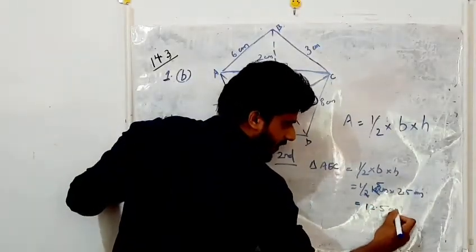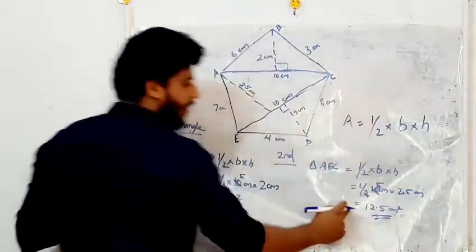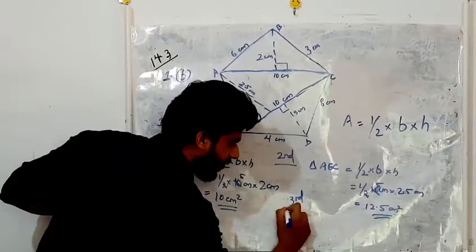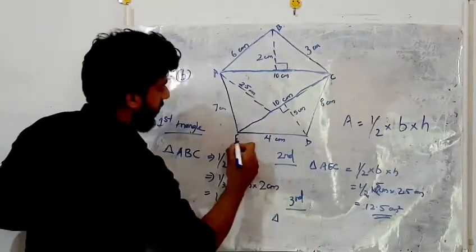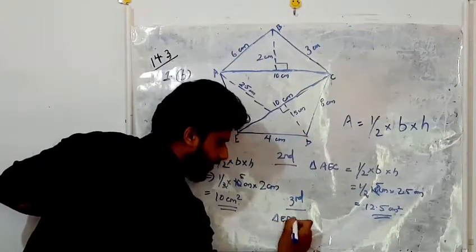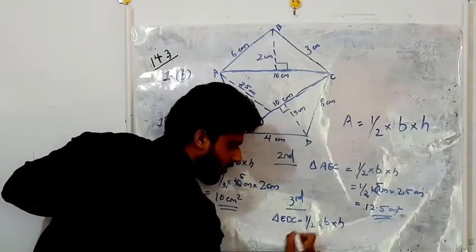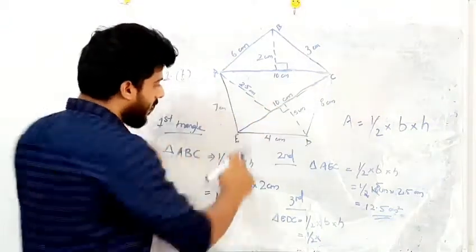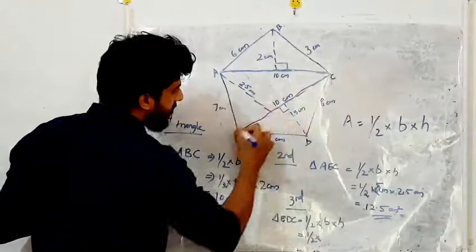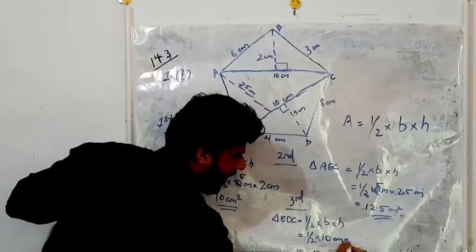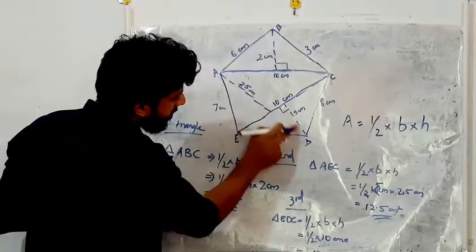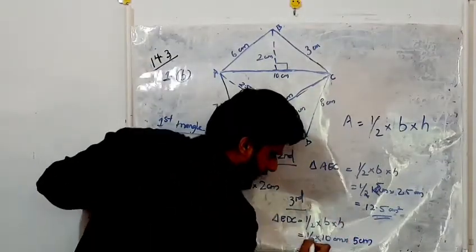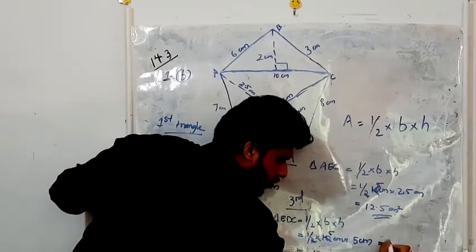The area of the third triangle EDC = ½ × base × height. The base EC is the same as before — 10 cm. The height from D is a perpendicular line to the base, given as 5 cm. So ½ × 10 × 5 — 2 and 10 cancel giving 5, so 5 × 5 = 25 cm². This is the area of the third triangle.